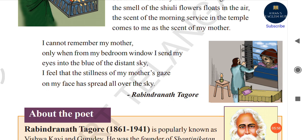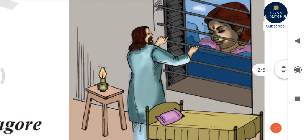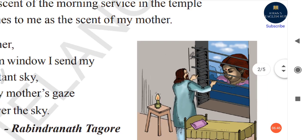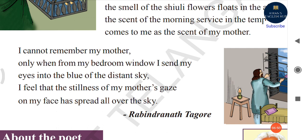Third stanza: 'I cannot remember my mother. Only when from my bedroom window I send my eyes into the blue of the distant sky.' What a beautiful sentence. He cannot remember his mother again, but he remembers her when he sends his eyes into the blue of the distant sky. Students, 'sending eyes into the blue sky' does not mean removing his eyes and throwing them — it means observing the sky through the window, looking at the sky. Just look at the image here — he is looking through the window as though his mother was spread all over the sky.